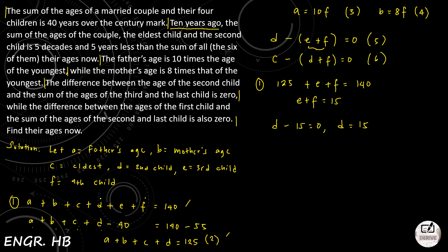We found D = 15. From Equation 6, C − (D + F) = 0, substituting D = 15: C − 15 − F = 0, therefore C = 15 + F. This is Equation 8. We now have the value of D and an expression for C in terms of F.